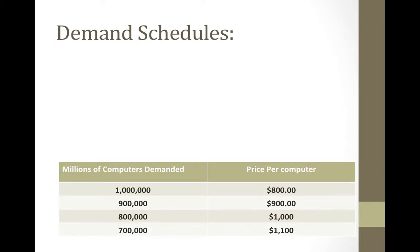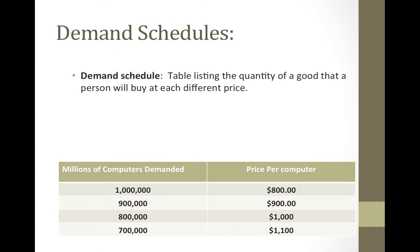Demand can actually be put on a schedule and measured, and economists do this. These measurements are estimates, and there are a lot of things that factor into it, but it can nevertheless be done. A demand schedule is a table listing the quantity of a good that a person will buy at each different price.